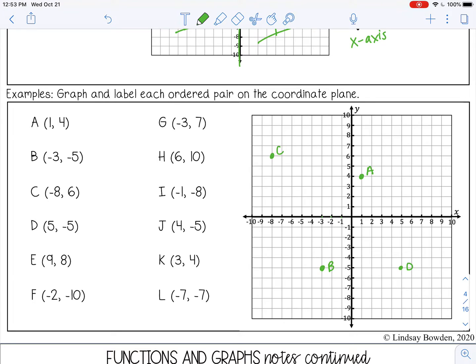E is at nine, eight. So right nine, up eight. F is at negative two, negative ten, so down here. G is at negative three, seven. So left three, up seven.